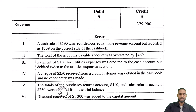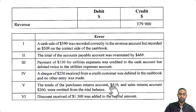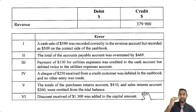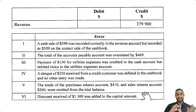Error five: the totals of the purchases returns and sales returns accounts were omitted — we just have to put those in. Error six: discount received of $1,300 was added to capital. That means capital is too high, so we have to reduce it by $1,300 and then show the $1,300 as a separate discount received item.